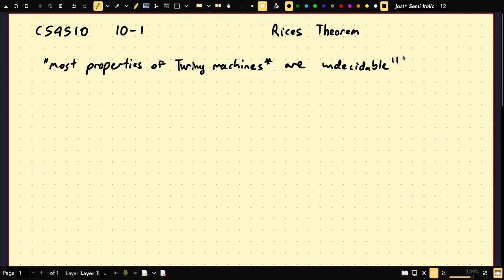Once you see the proof, it can make proving undecidable languages very easy. The theorem states that most properties of Turing machines, and I'll put a little asterisk by this because I have to expand on that, are undecidable.